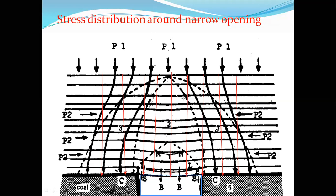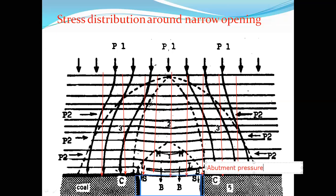Due to mining activity, whatever forces were in equilibrium get redistributed. The forces which were acting vertically get redistributed onto the sides and the arch of the opening. As a result, the load due to redistribution of forces acting on the edges of the opening — this portion on either side — is called abutment pressure.